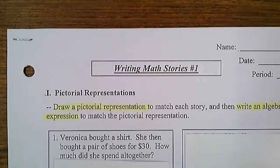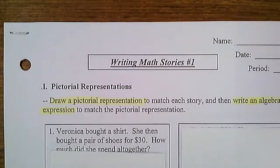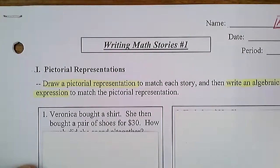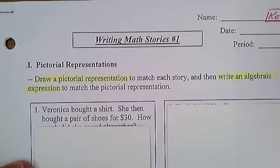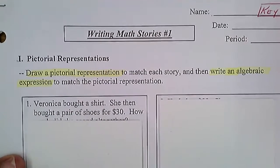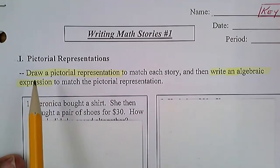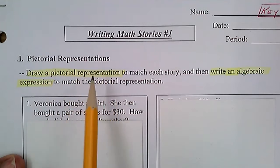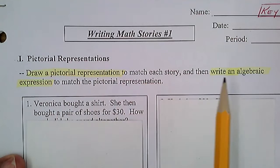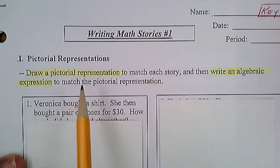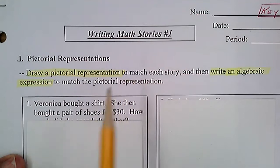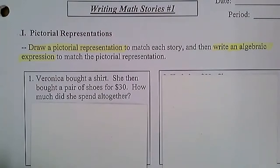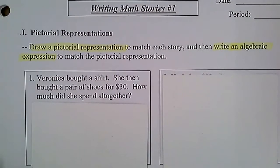I believe there are 10 or 11 questions in this handout. I'm going to do the odd-numbered ones with you, and then you're going to have to do the even-numbered ones for your homework. So what we're going to do is draw a pictorial representation — that's using the tiles and pictures to match each story. Then we want to write an algebraic expression to match the pictorial representation we came up with. We've already practiced these, but these are some new ones.